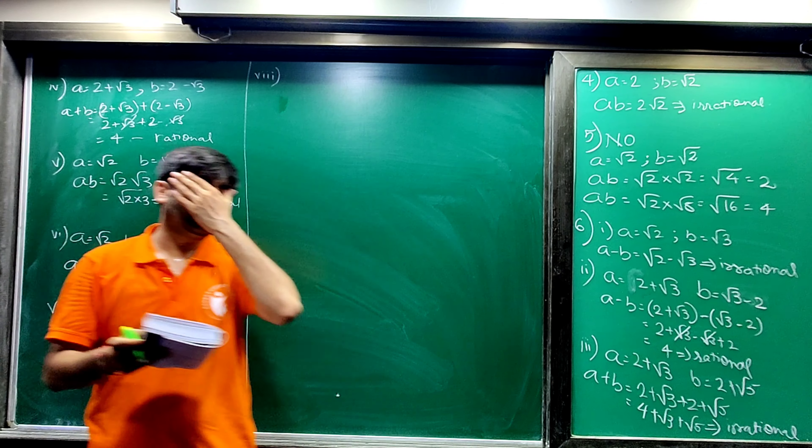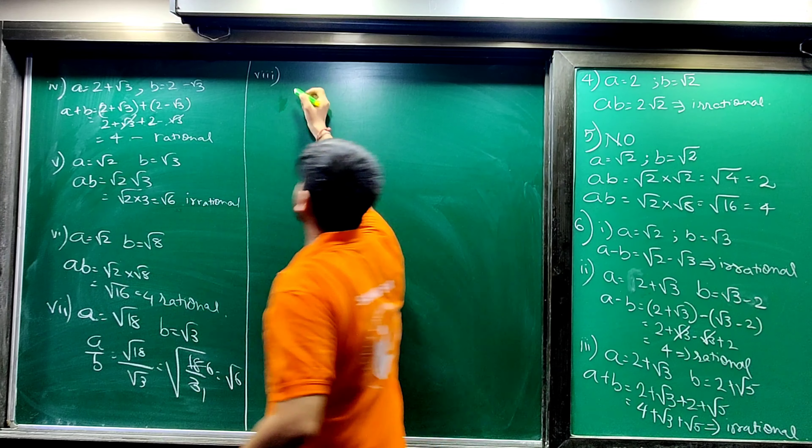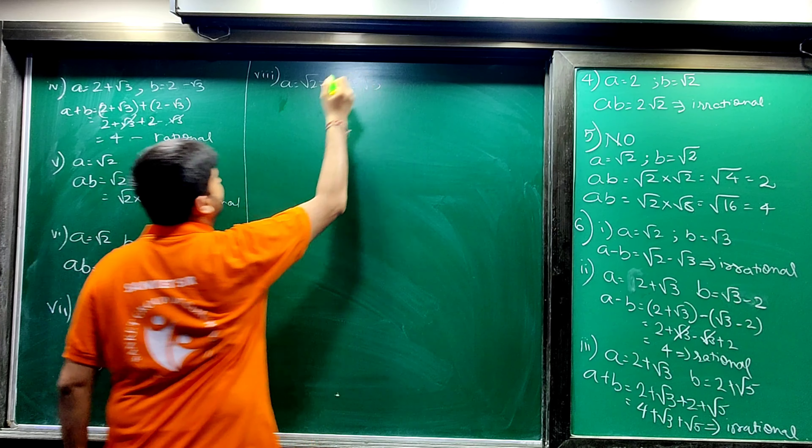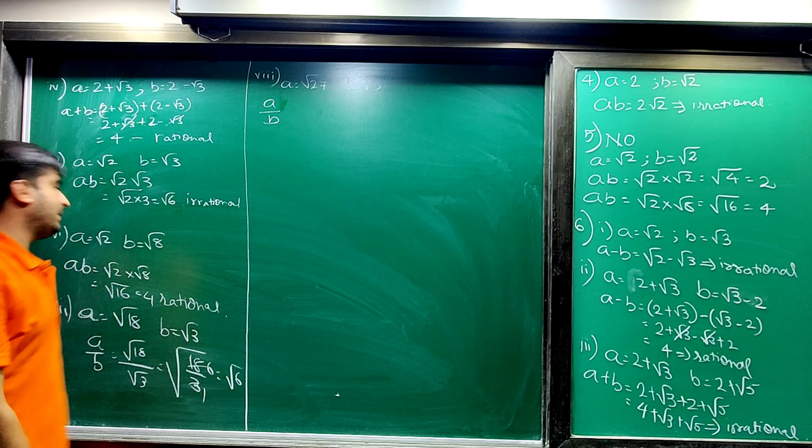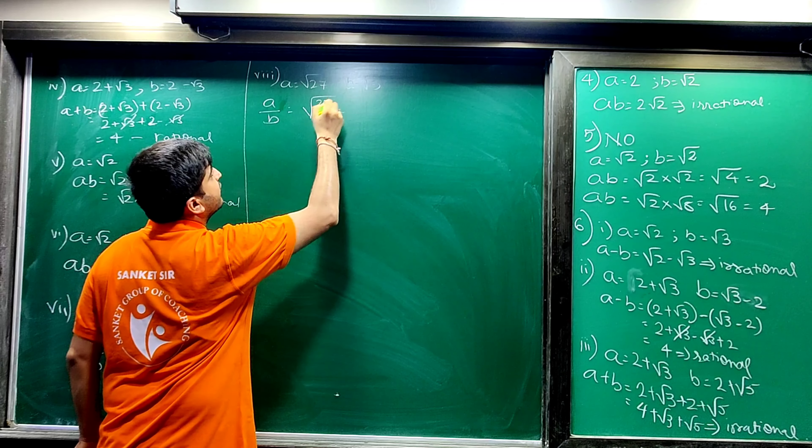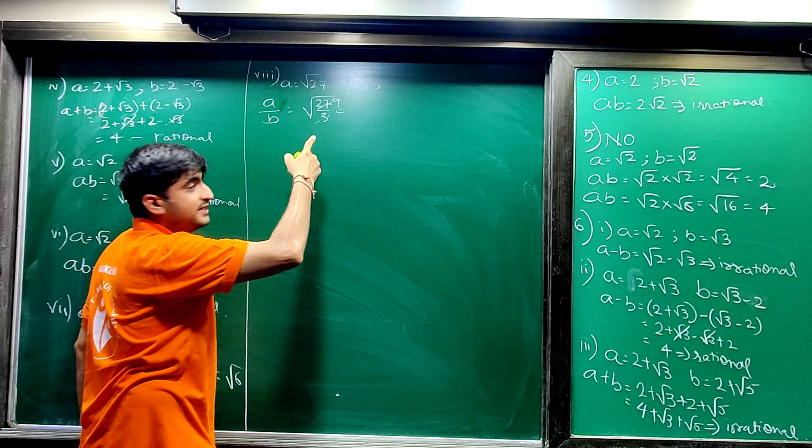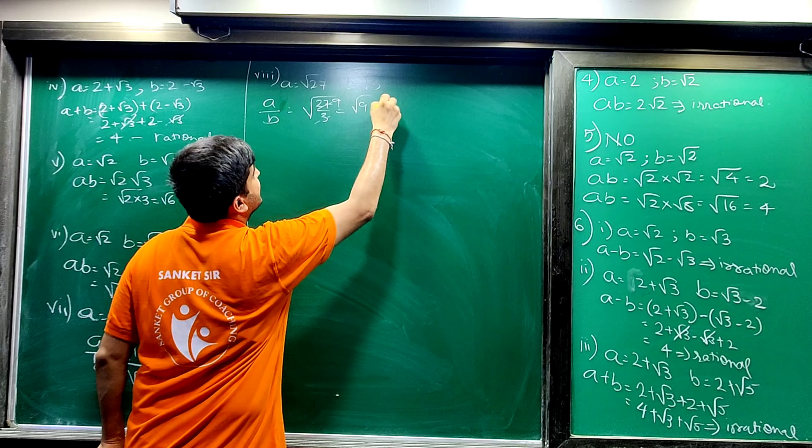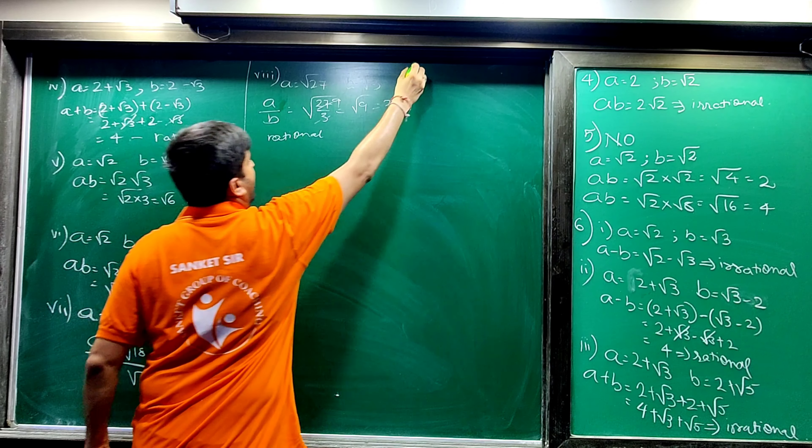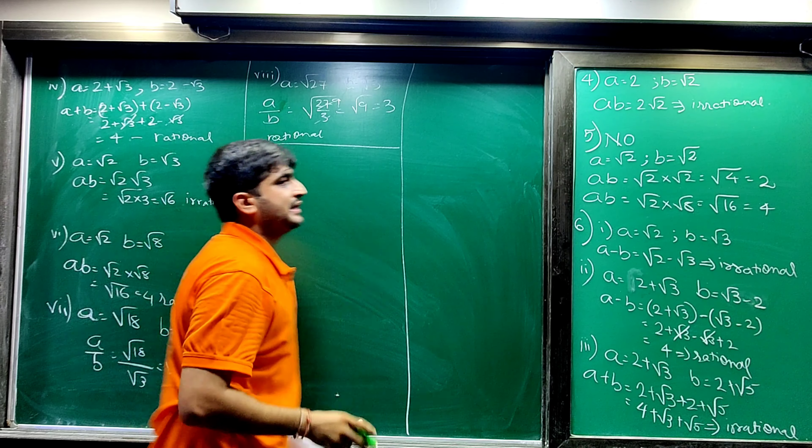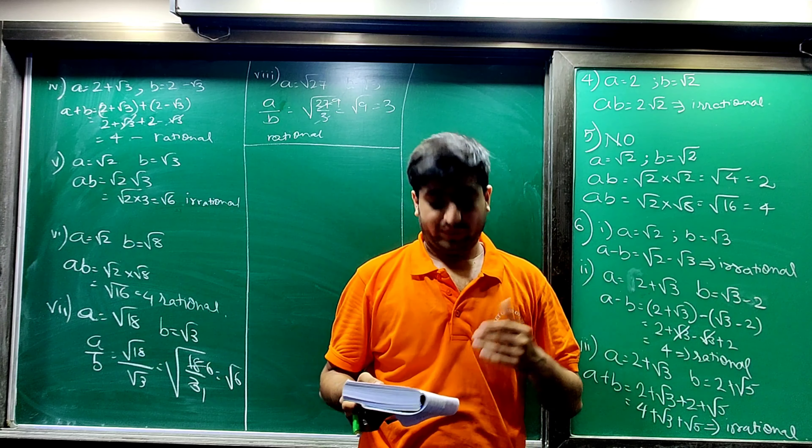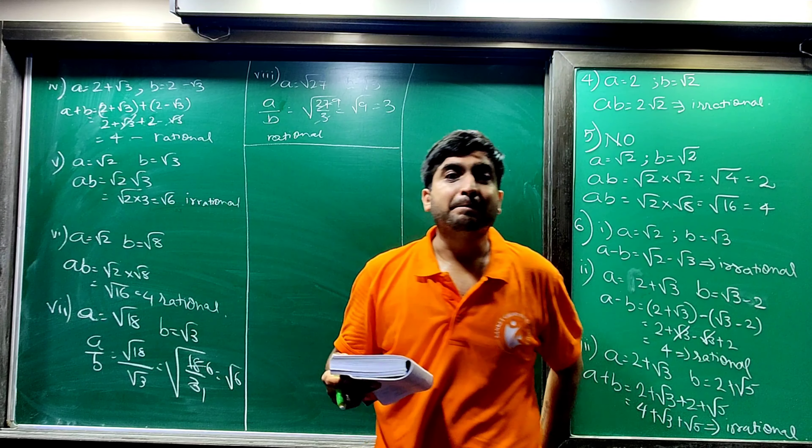And last sum, eighth sum: quotient is the rational number. So for that, a is equal to let's say root 27 and b is equal to let's say root 3. So a upon b, quotient, root 27 upon root 3, which is nothing but 1s are, 9s are 3, 1s are, 3, 9s are, under root 9, answer 3. This is the rational number. So you can use your brains by choosing your irrational numbers.